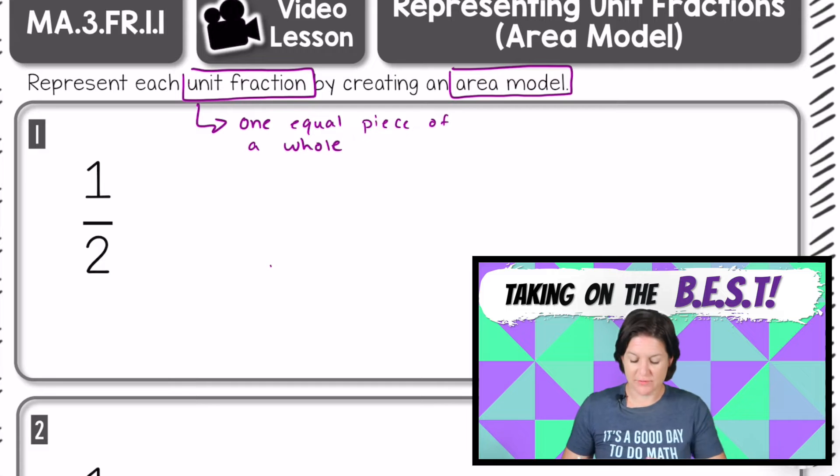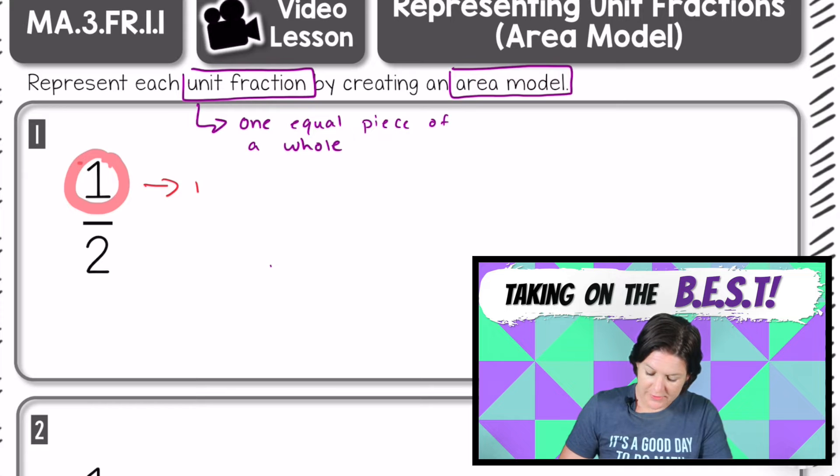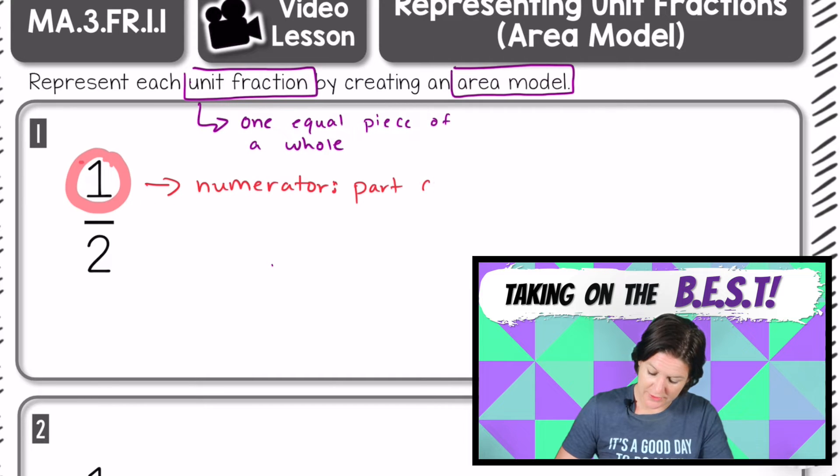Now let's label the parts of this fraction here. We have the number one right here, and this one is in the top position of the fraction. The one is in the numerator's position. You see that number on top? That's called the numerator. It describes the amount that is being considered or shaded. Part considered.